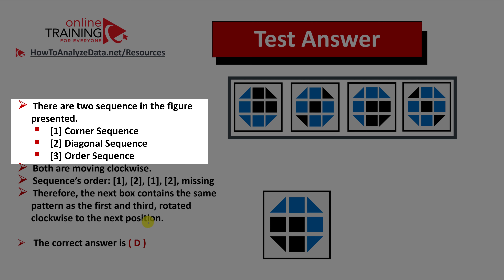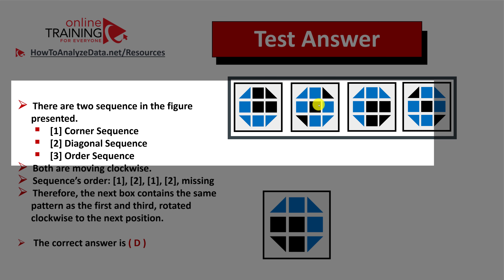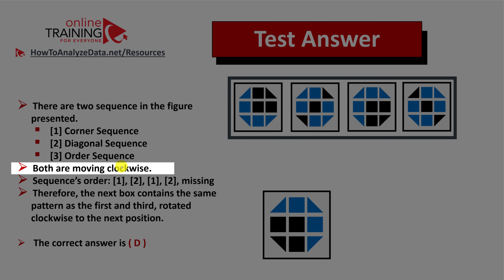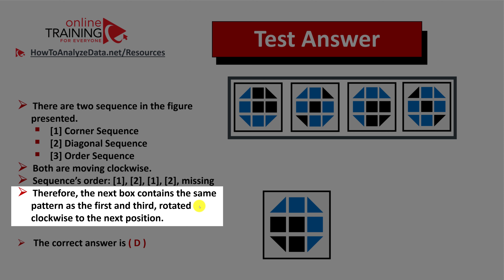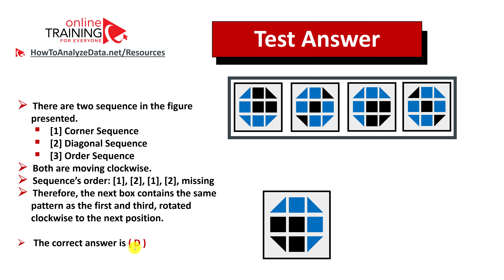Let's recap. There are two sequences: a corner sequence and a diagonal sequence. The corner sequence appears in boxes one and three, and the diagonal sequence in boxes two and four. Both sequences move clockwise. The order is 1, 2, 1, 2, and then the missing item follows the same pattern. This is why the next box contains the same pattern as the first and third, rotated clockwise to the next position. The correct answer is choice D.